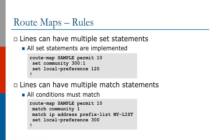Let's look at some sample route maps. Lines can have multiple set statements, and if that happens, all the set statements are implemented by that particular line. So you have route map sample permit 10 with set community 300:1 and set local-preference 120. Anything that passes through this route map statement will have both the community and the local preference set. In this case, nothing is matched, so everything that is advertised will be matched by this statement.